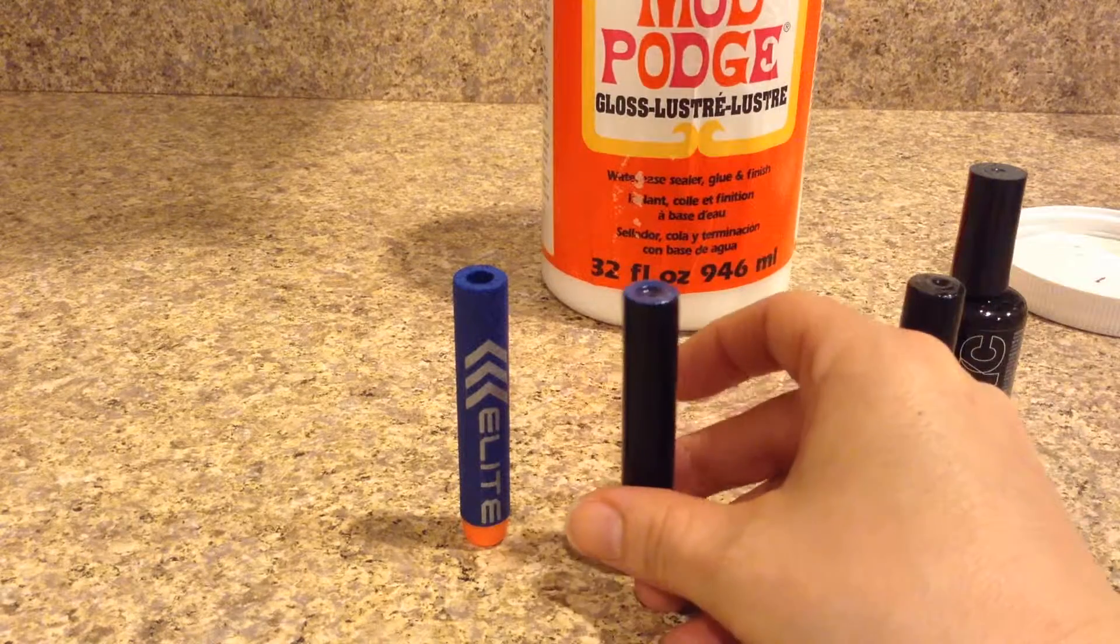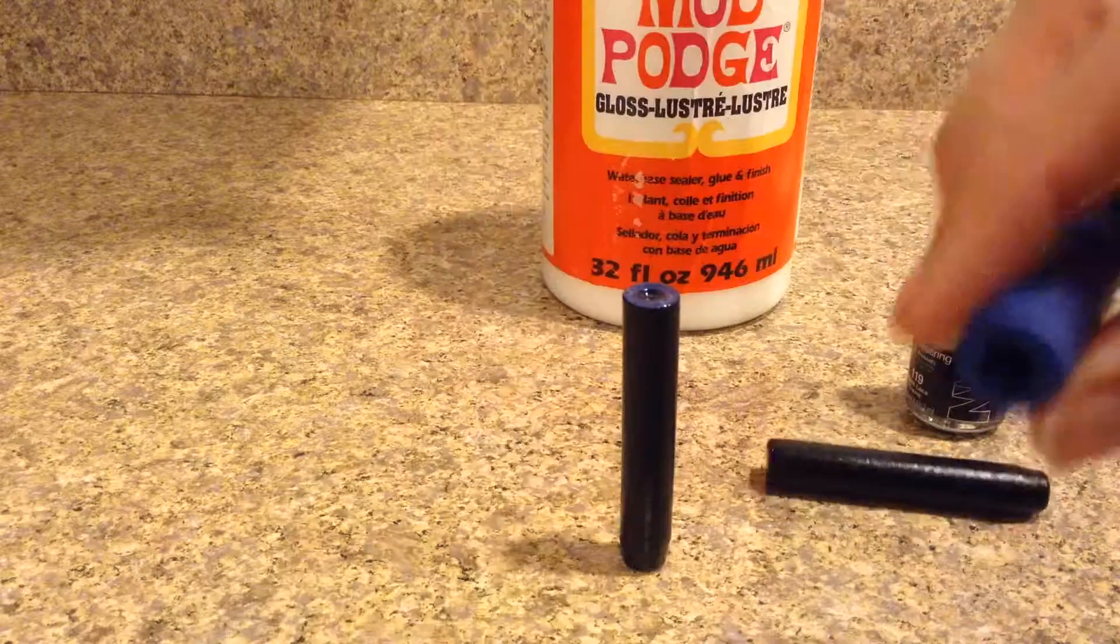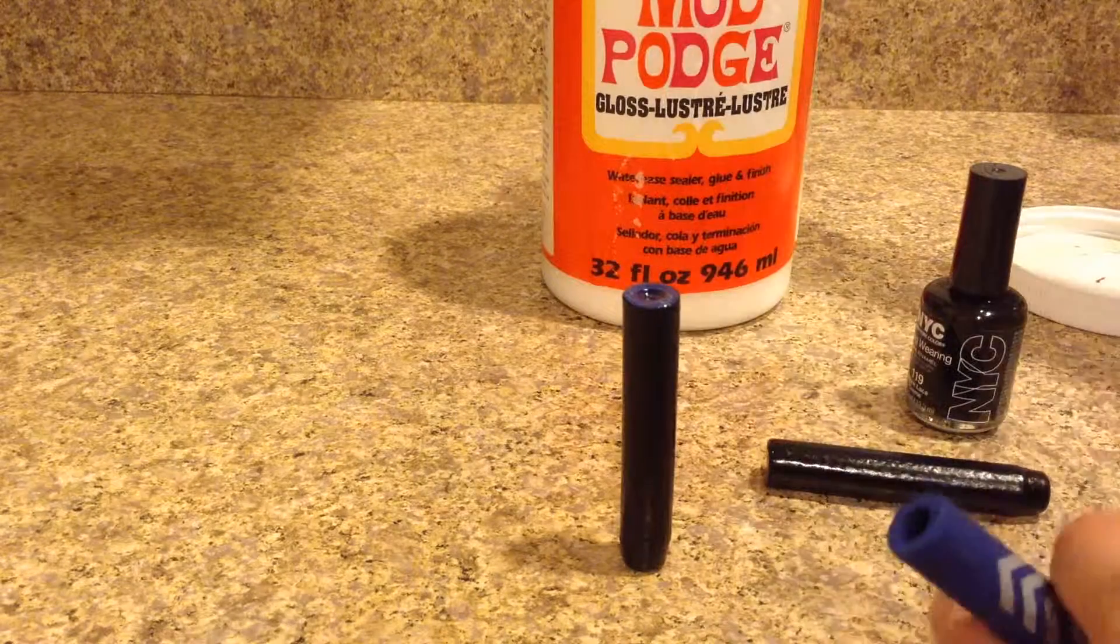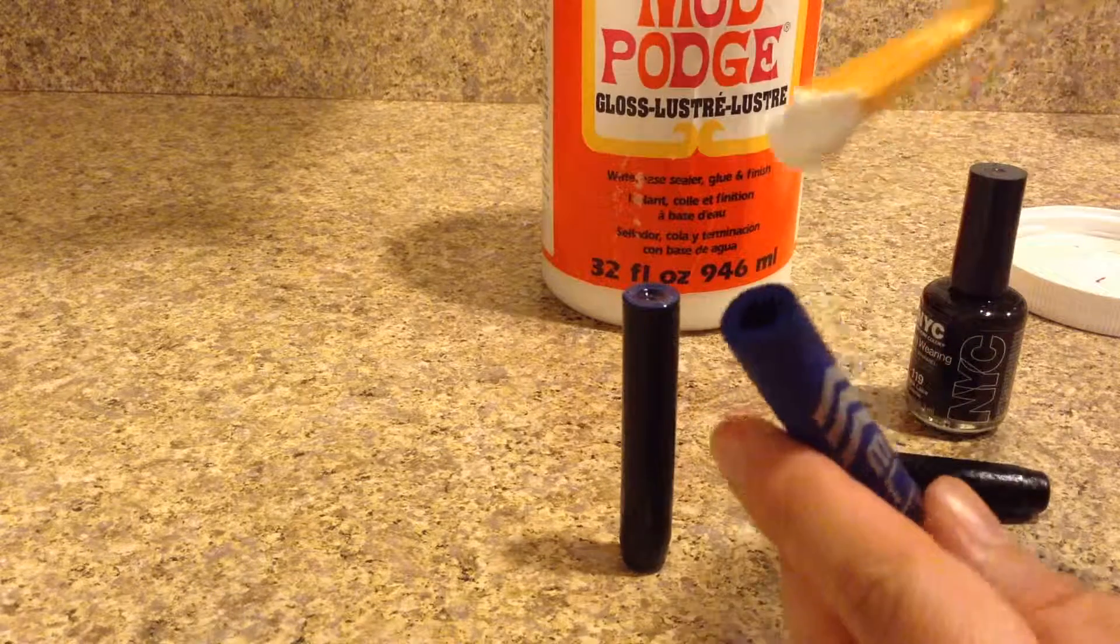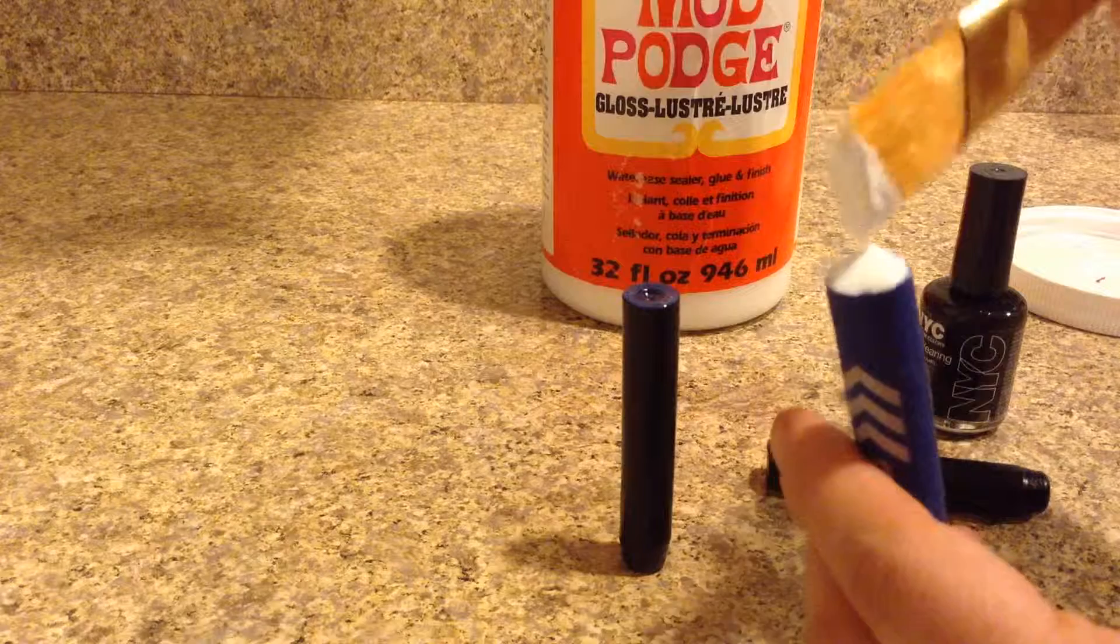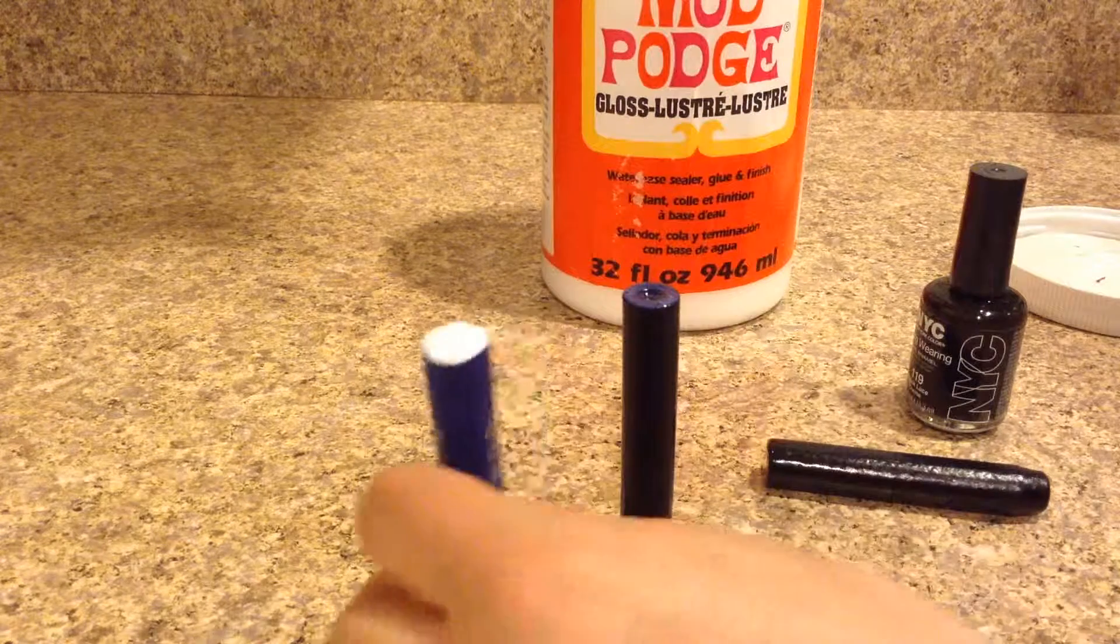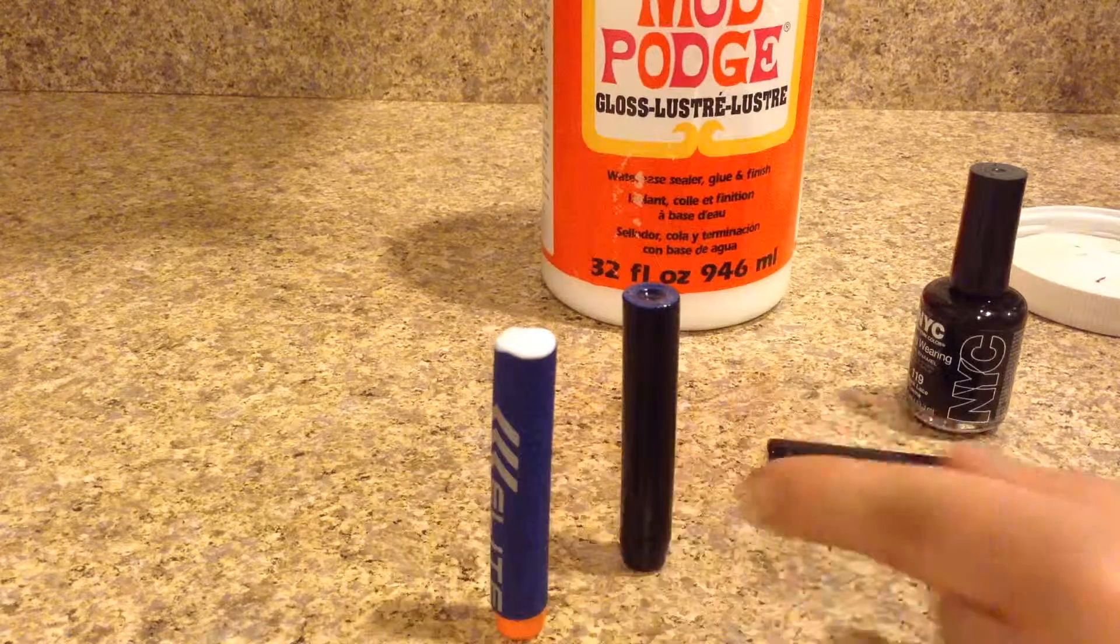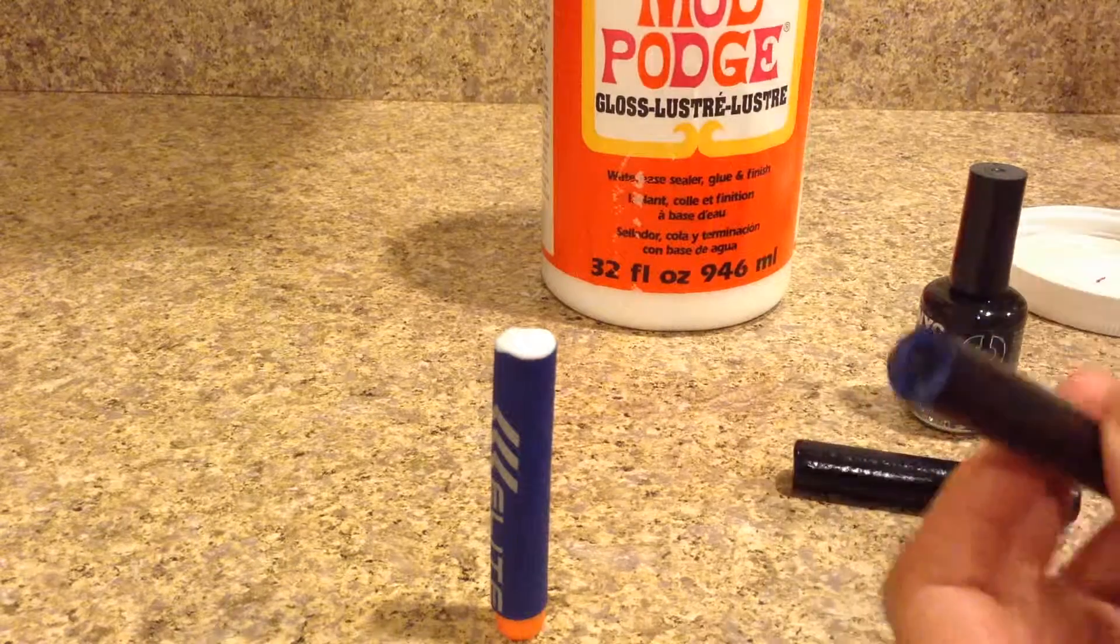So here I'm showing you how I'm finishing off the ends. I'm using the unfinished one, and I'm just using a really thick, generous coating one time of Mod Podge, and you just make it a nice thick top and let it dry. It takes quite a while to dry, but when you're done, you have a nice sealed end.